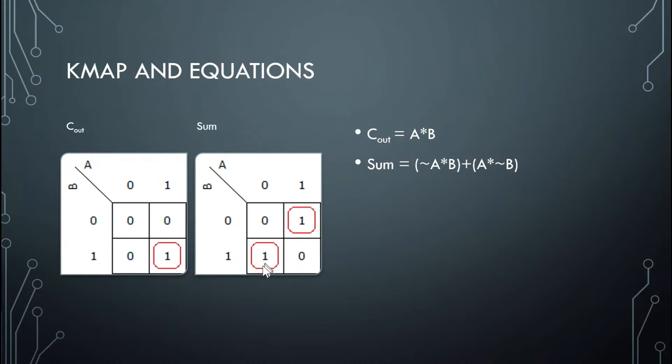And from here, we can derive our equations. If we could simplify, we would, but we can't in this case because we can't combine any 2 to the n pairs except for 2 to the 0. So here, let's get our equations. We have A is high and B is high, so Cout is equal to A and B.